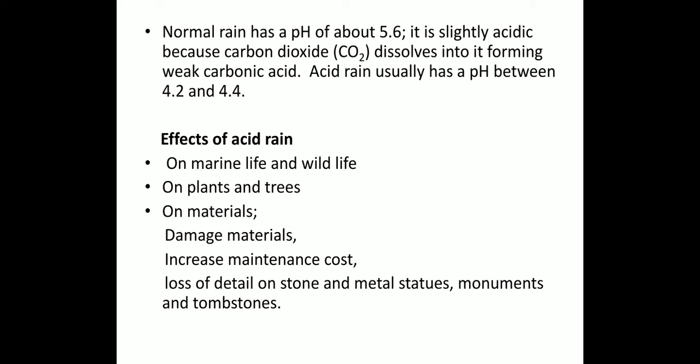Normal rain has a pH of about 5.6 — it is slightly acidic because carbon dioxide dissolves into it forming weak carbonic acid. But acid rain usually has a pH between 4.2 and 4.4, meaning it is more acidic than normal rain. At pH 7 a substance is neutral; below 7 it is acidic, and from 7 to 14 it is basic. This is how the pH varies for normal rain versus acid rain.